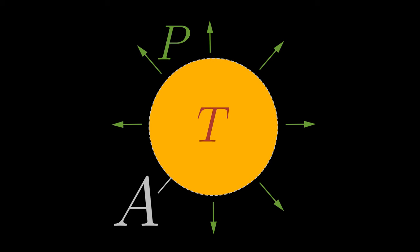This law describes the relationship between the temperature T of a body and its radiant power P. The surface area A of the body also influences the radiant power.